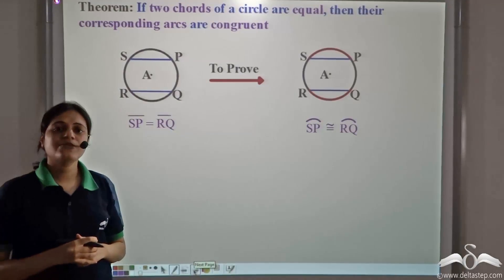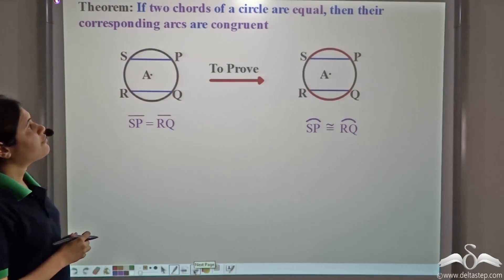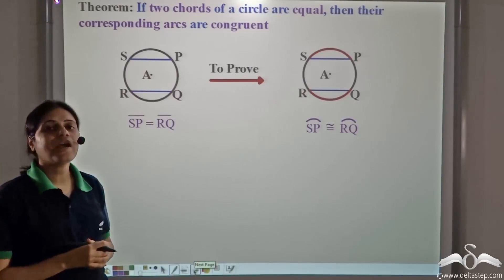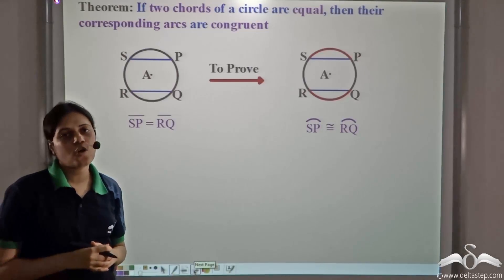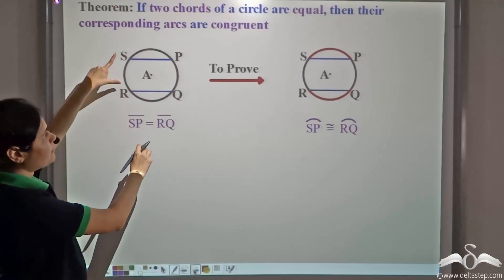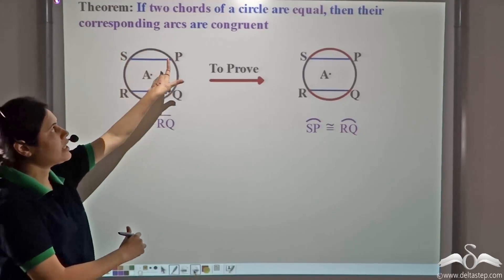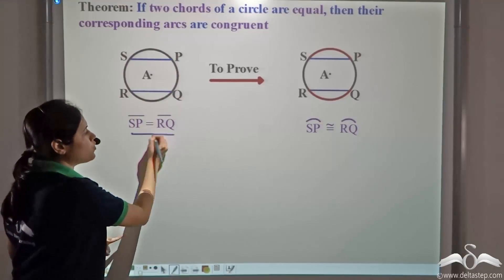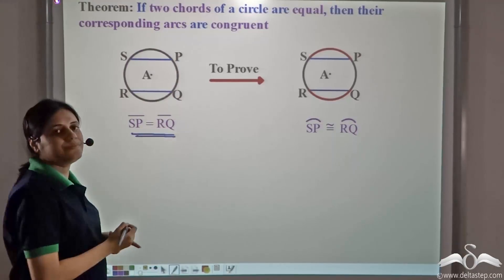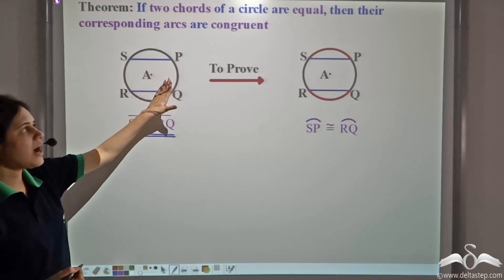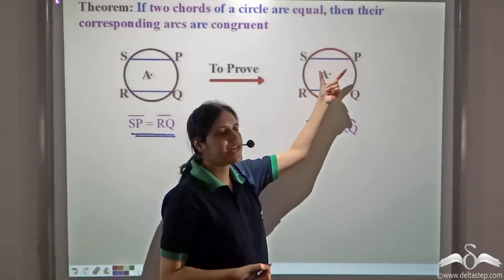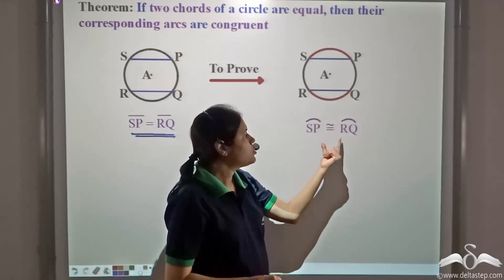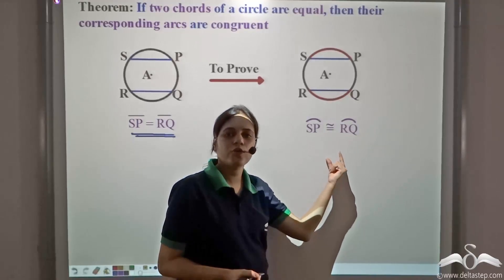First, let us prove this theorem: if two chords of a circle are equal, then their corresponding arcs are congruent. In this circle, chord SP equals chord RQ. The corresponding arcs are arc SP and arc RQ (shown in red), and we need to prove that even these will be congruent.